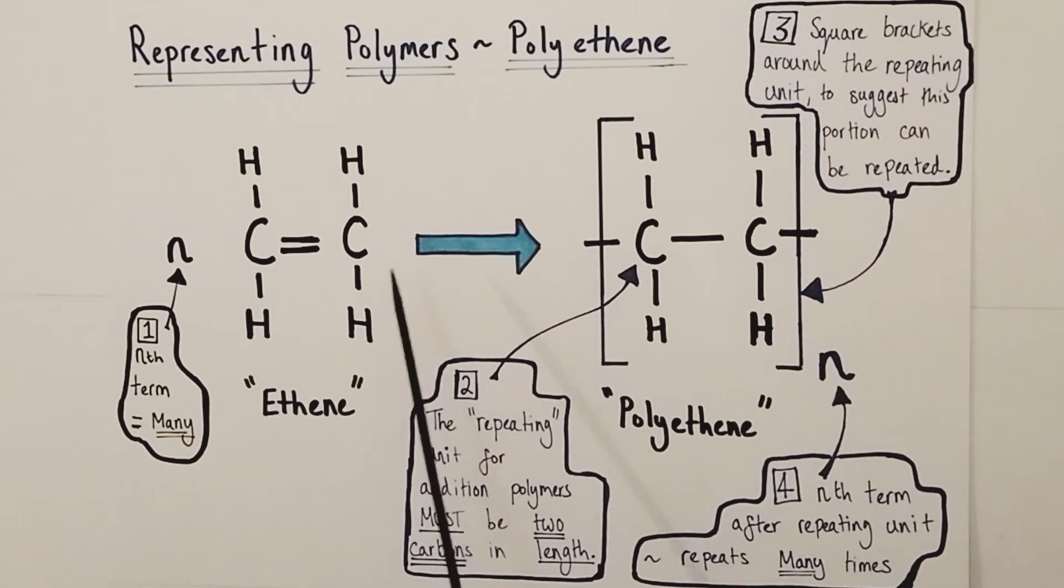Now on to the polymerization reaction itself. The best way to consider this is to think it's as if we've taken one of the bonds of the double bond, broken it open, giving us some leading edges either side, some unbonded electrons either side of the carbon that allow this monomer unit to join on to other monomer units which have done the same thing either side and create a continuous long chain molecule.